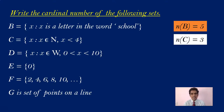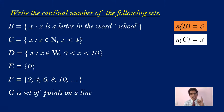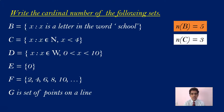Look at D: D = {x | x ∈ W, 0 < x < 10}. It's whole numbers between 0 and 10, not including 0 and 10 themselves, so you write 1, 2, 3, 4, 5, 6, 7, 8, and 9. We have actually 9 elements, therefore n(D) = 9.